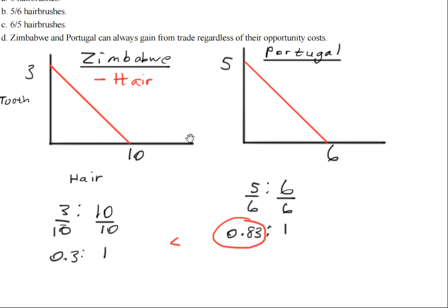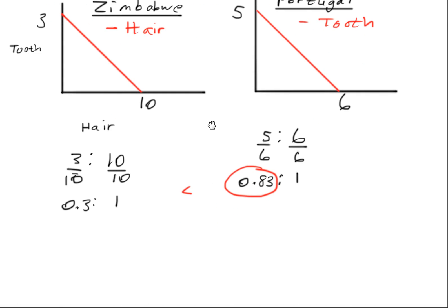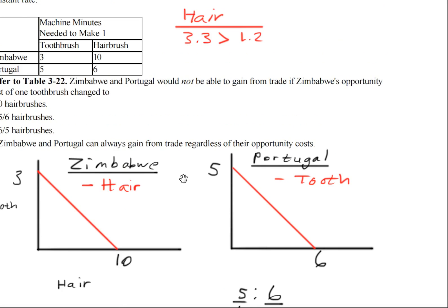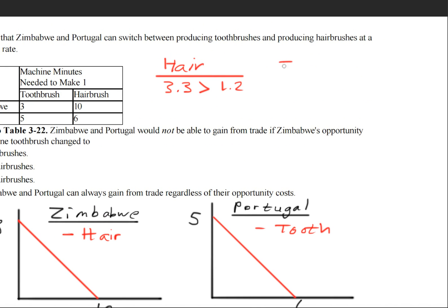So this value is greater than point three. So Portugal has a comparative advantage for toothbrushes. I'll just write tooth. So once again, I will write here tooth, and it'll be point eight three, it's greater than point three.